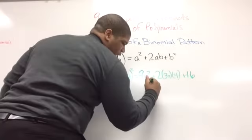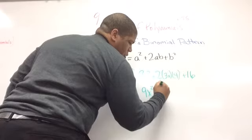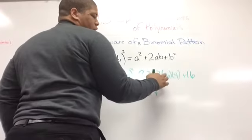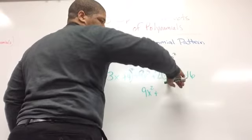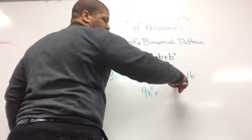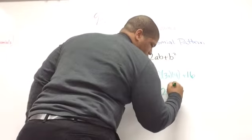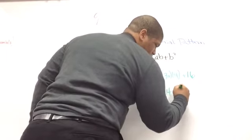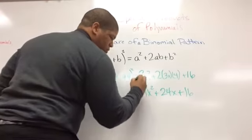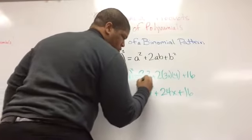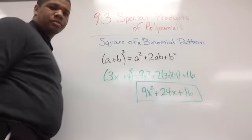That turns into 9x squared, plus 2 times 3x equals 6x, times 4 is going to give me 24x, plus 16. And that's going to be my answer.